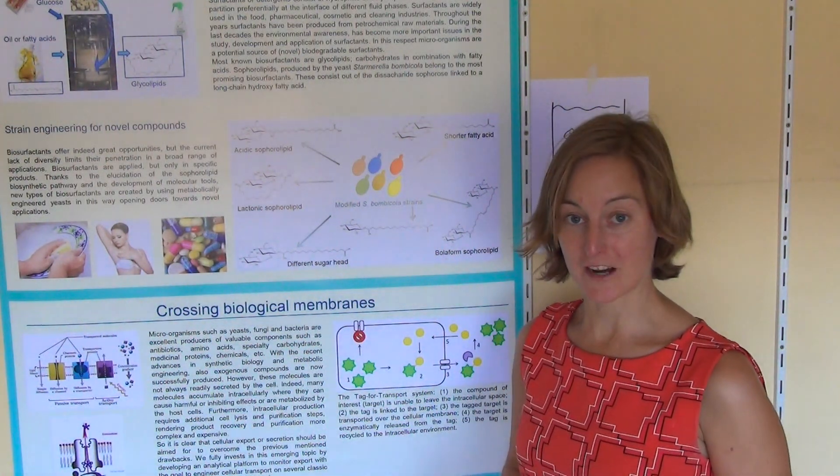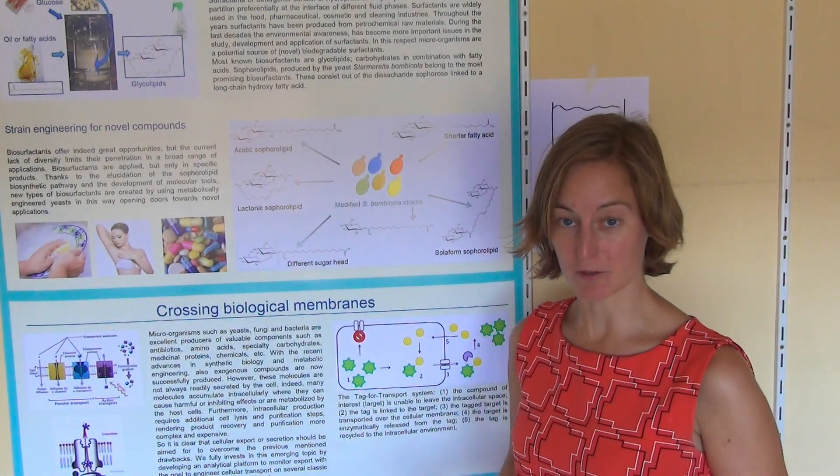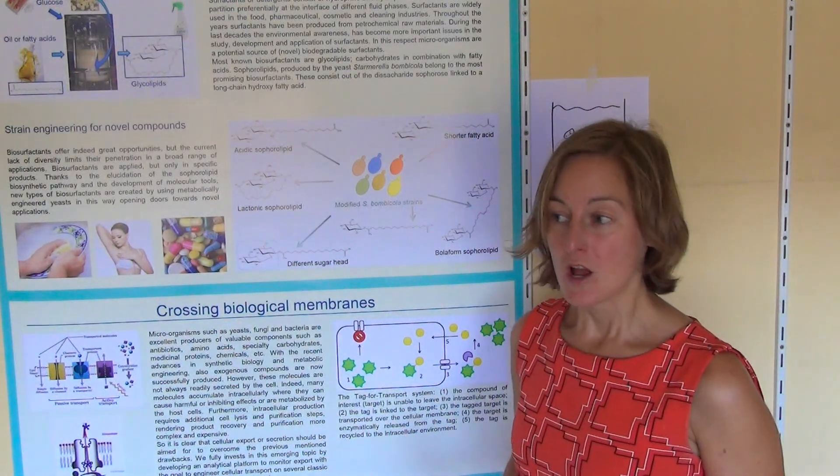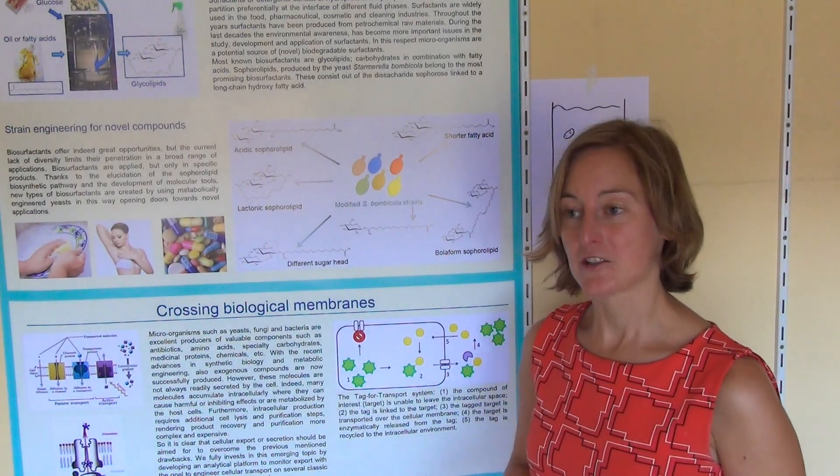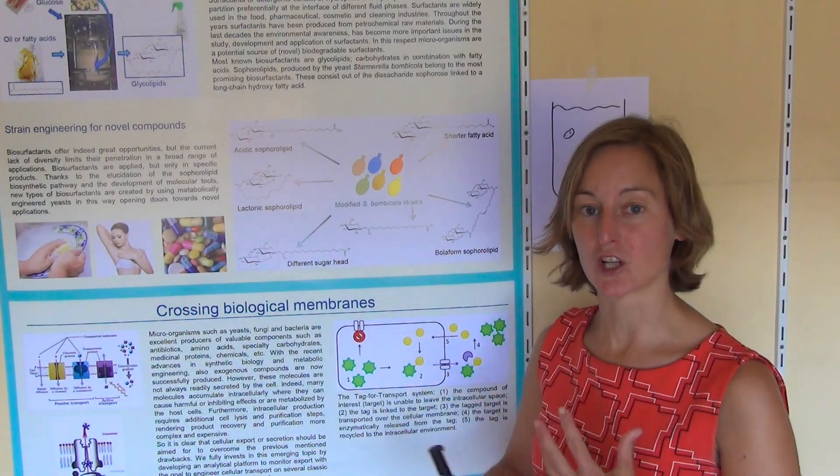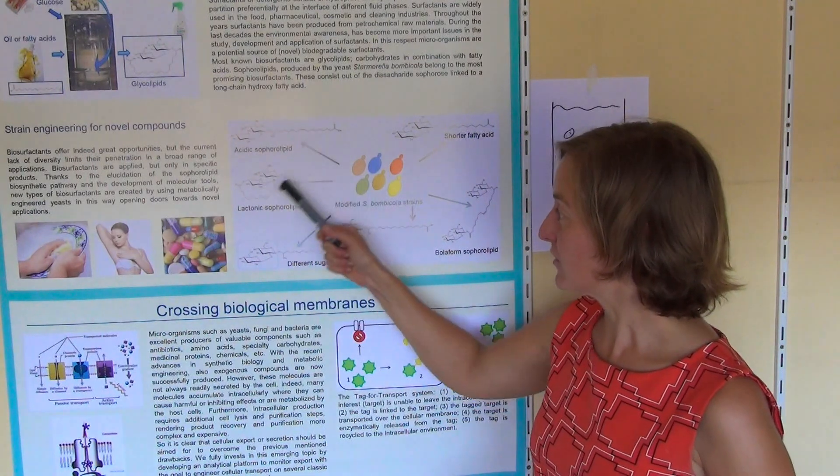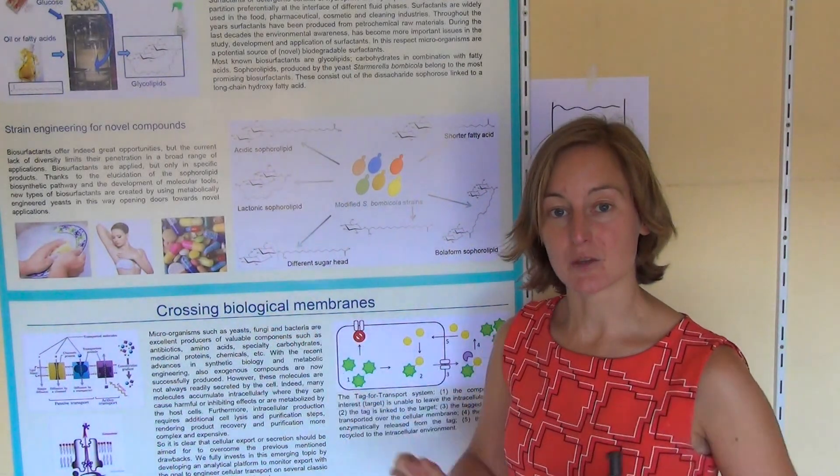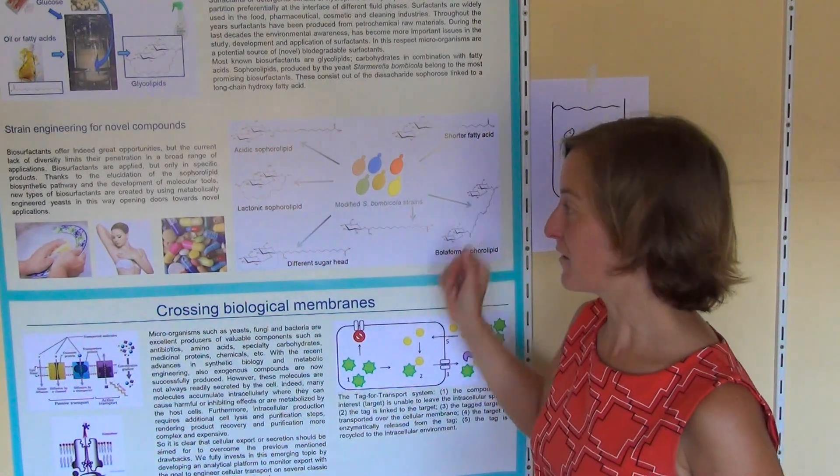You might not realize, but we use a lot of surfactants in our daily life when washing the dishes, washing our hands, or taking a shower. Those surfactants are petrochemical derived and end up in the wastewater. So in order to offer a more environmentally friendly alternative, I started working with yeast which produces those surfactants with a biological and green process. Those surfactants are called sophorolipids and have a specific structure. Now, in order to even further broaden up the application potential, we developed modified yeast strains which produce different types of surfactants.